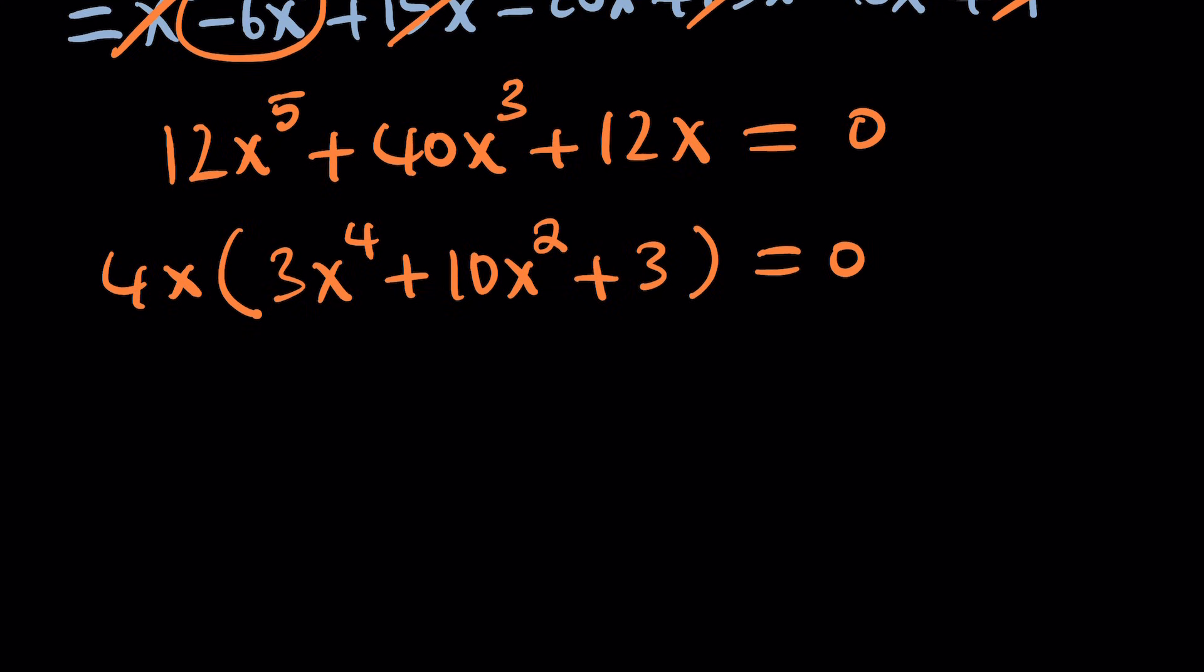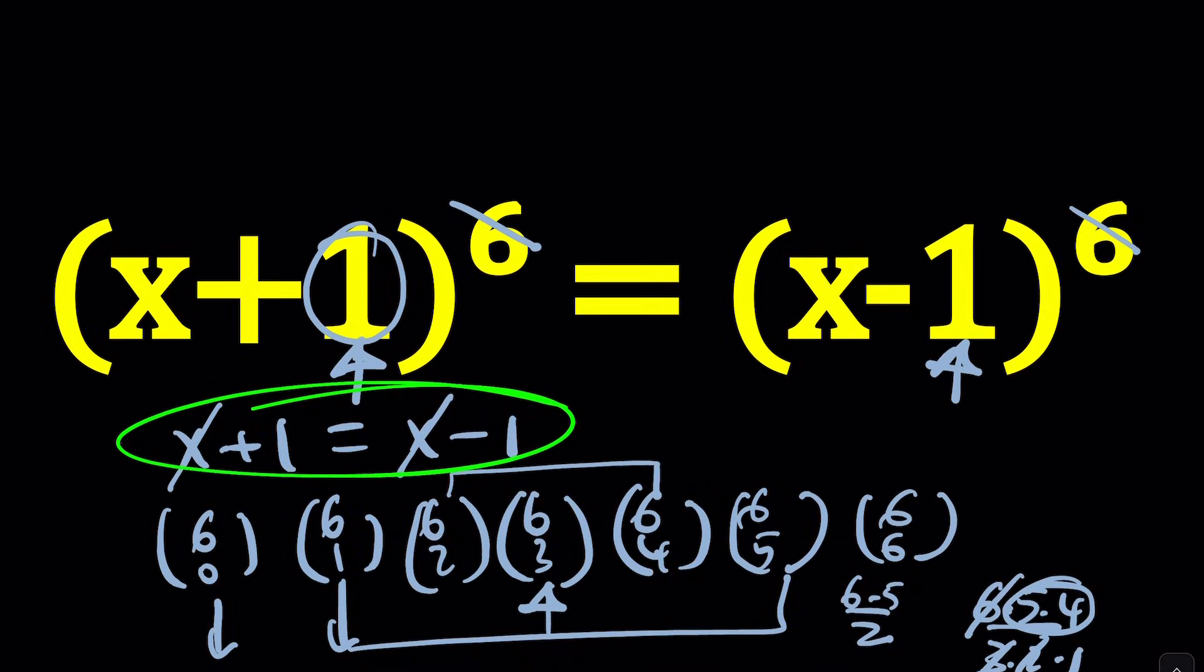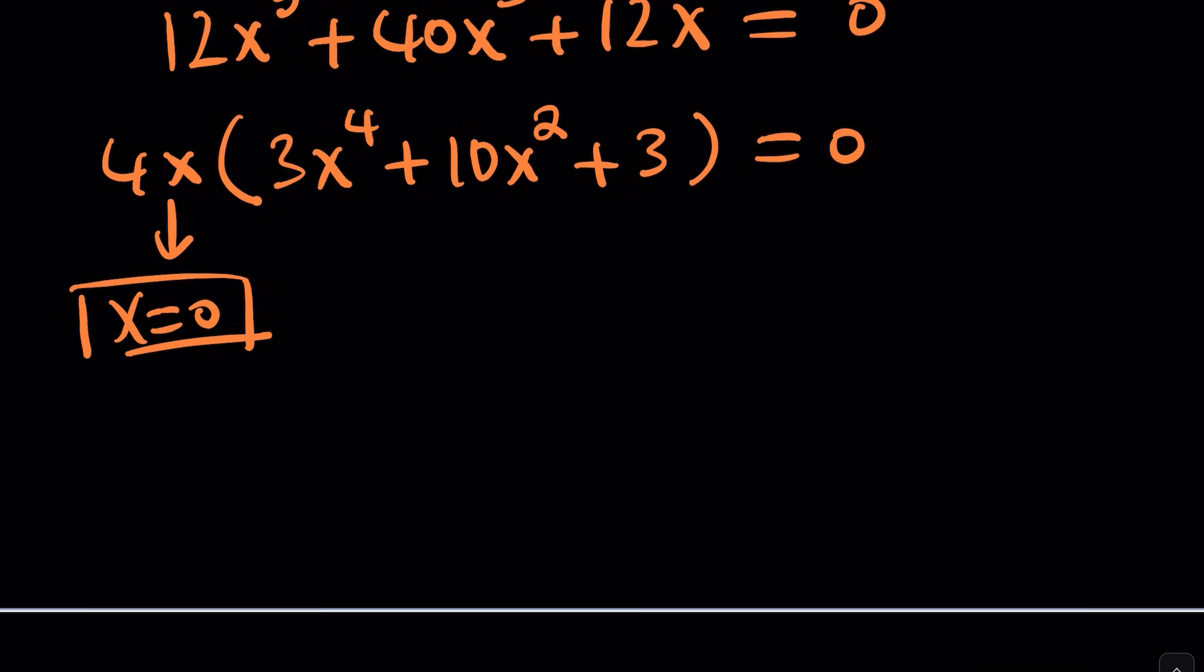From here, obviously, x = 0 happens to be a solution. And guess what? We can go back and check it, because if you replace x with 0, you're going to realize, surprise, 1 to the 6th power is the same as negative 1 to the 6th power, because they're both 1, right? Good. We got one solution, at least. And we can find more solutions from here. How? Well, we can set x^2 = y.